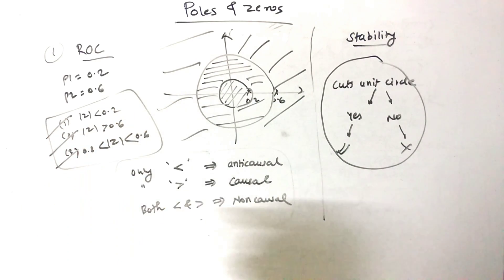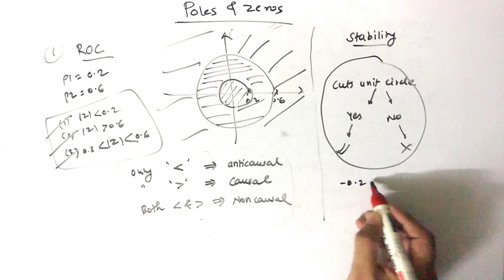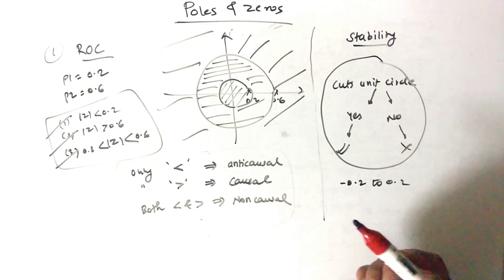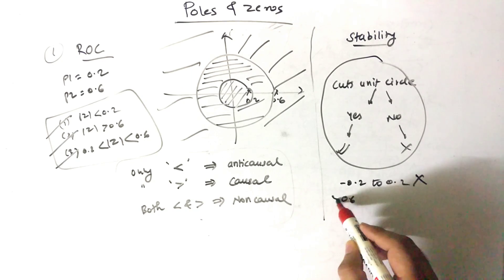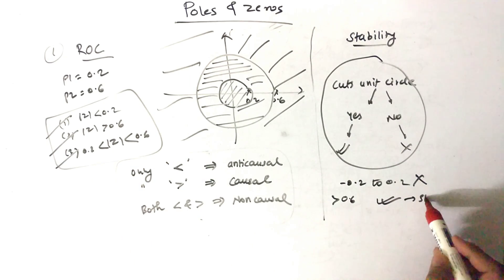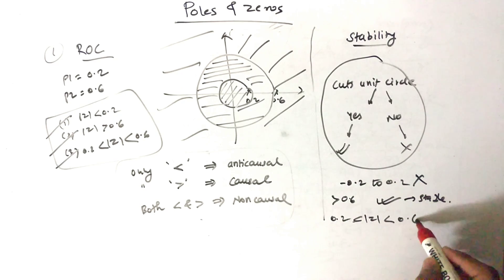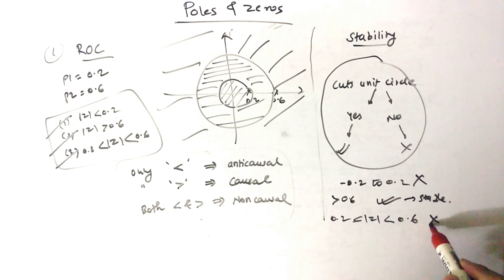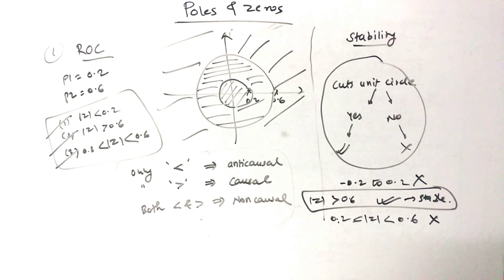We have three regions. For |Z| less than 0.2, the range is -0.2 to 0.2, so it will not cut the unit circle — it is not stable. For |Z| greater than 0.6, it will cut the unit circle — it is stable. For 0.2 less than |Z| less than 0.6, it will not cut the unit circle, so this system is also not stable. This is how you find whether a region of convergence cuts the unit circle.